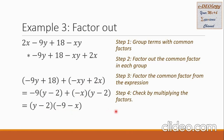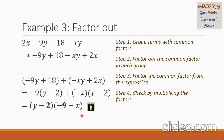For step 4, I multiply the factors to check. So y times negative 9 gives negative 9y. Then y times negative x gives negative xy. Negative 2 times negative 9 gives positive 18. Negative 2 times negative x gives positive 2x. So I am sure that the factors are correct, and this is our final answer.